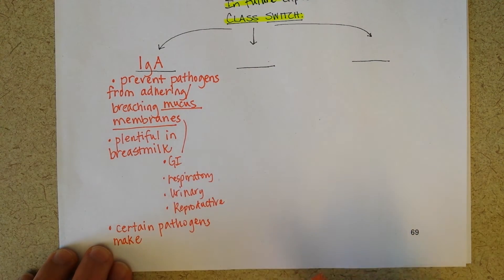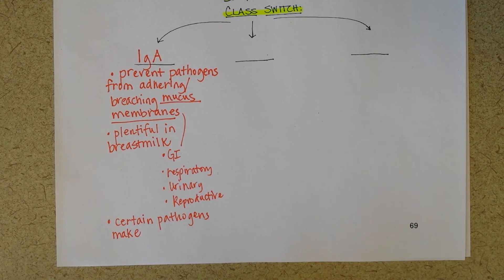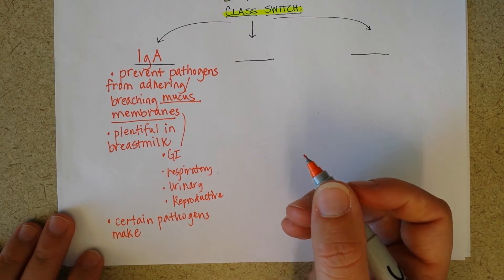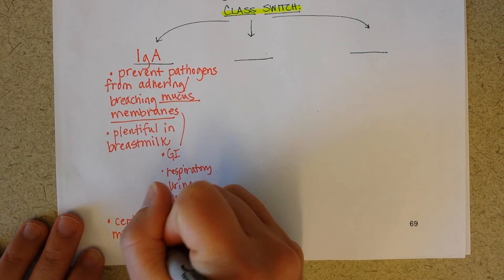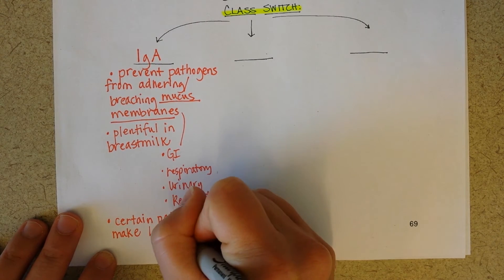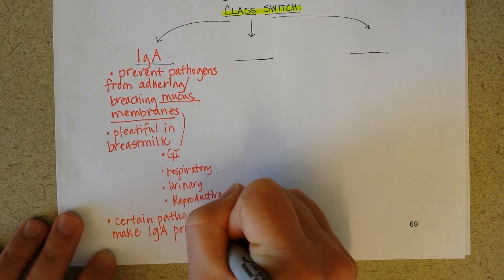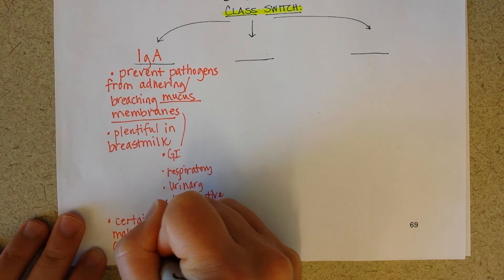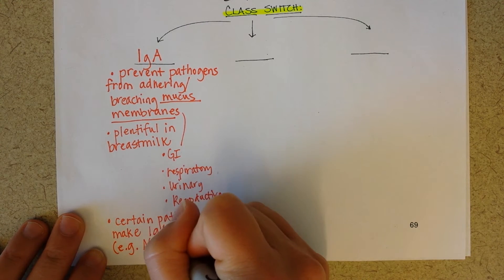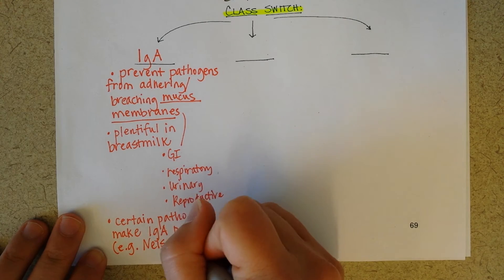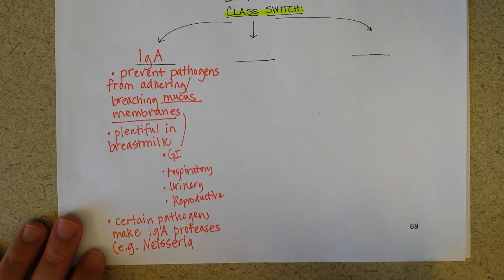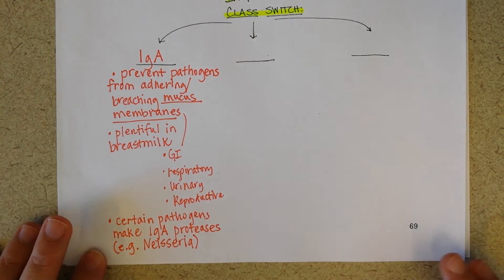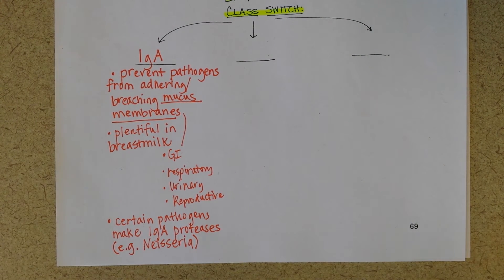It's kind of like warfare — the host comes up with these IgA antibodies, and then the pathogen comes up with proteases that will chop up IgA antibodies. For example, Neisseria gonorrhea can cause gonorrhea, and Neisseria meningitidis can cause respiratory infections and meningitis. So that's the first kind.